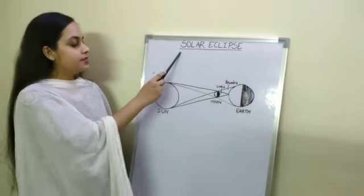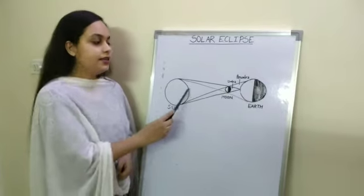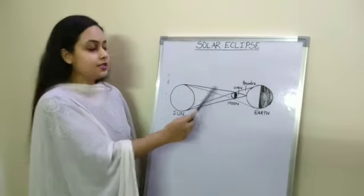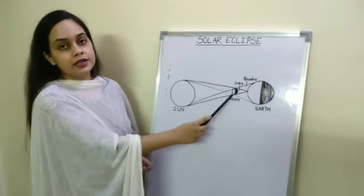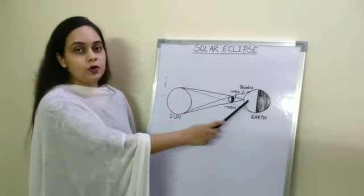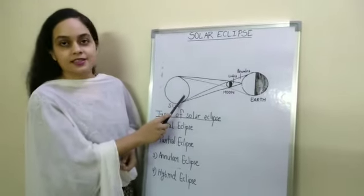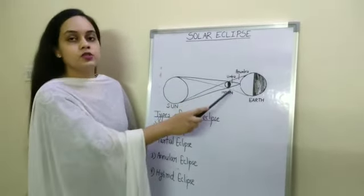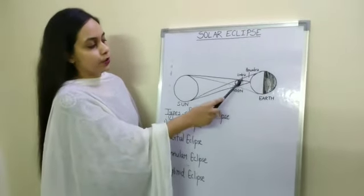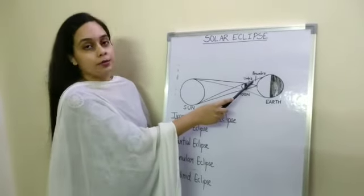A solar eclipse occurs when the moon comes in between the sun and the earth, and because of the presence of the moon in between the sun and the earth, the sunlight is blocked completely or partially by the moon, and the moon casts a shadow on the surface of the earth. When the moon eclipses the sun, it casts two types of shadows on the surface of the earth — the smaller and darker one is known as Umbra, and the larger and lighter one is known as Penumbra.